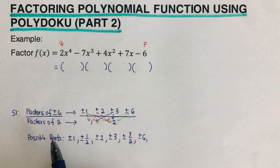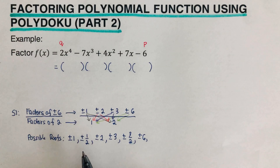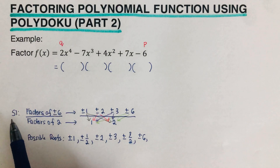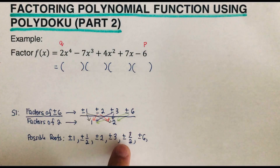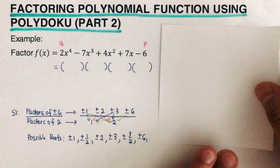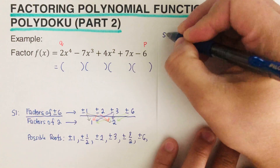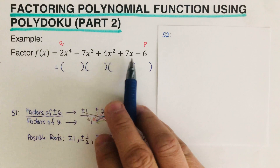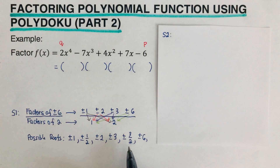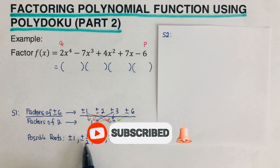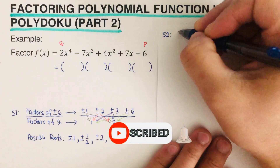The rational zero theorem is trying to narrow down all the possible numbers, since there are infinitely many numbers we could test. This theorem narrows down the possible roots to test. After we're done with step one, we move on to step two: use polydoku to test which of these roots are actually factors. We will start with the integers first, and after we've exhausted all the integers, if none of them are factors, then we go to the fractions.